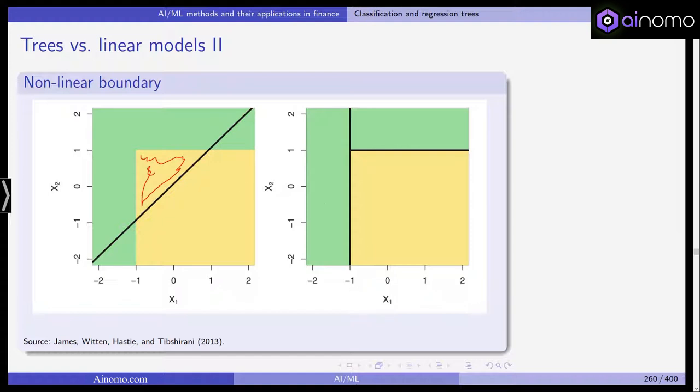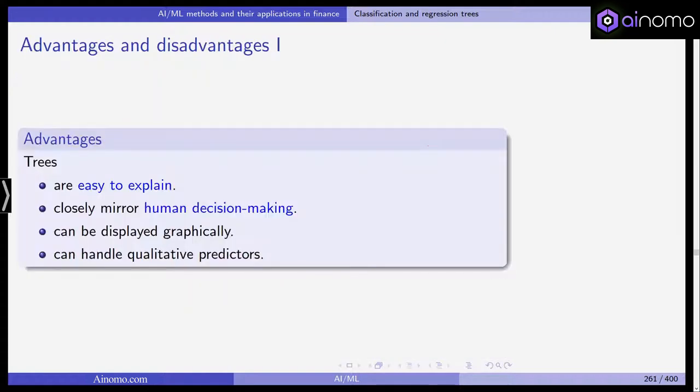However if we have a non-linear boundary, you can see that using a very simple support vector linear classifier here leads to a huge classification error, whereas we get an almost, well actually it is a perfect classification. So we have a non-linear boundary, decision boundary, and the regression tree, although we are using linear objects, we are using rectangles, this is a perfect classification. So even though we are using linear rectangles, it might actually be that the regression tree fits the data much better if we have a non-linear decision boundary.